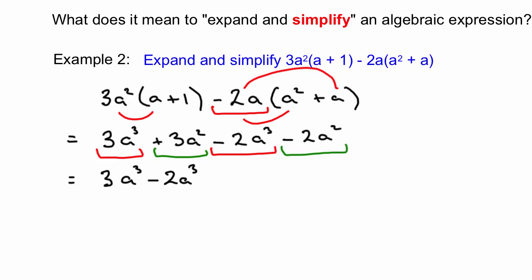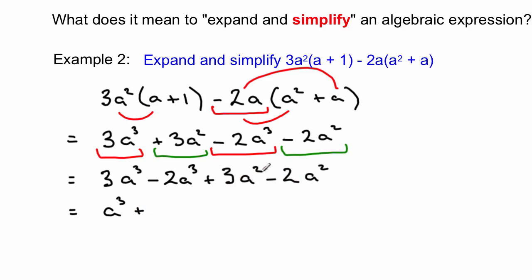There's also 3a squared and minus 2a squared, so we combine those as well: 3a squared minus 2a squared. Now simplify: 3 minus 2 is 1, so that's 1a cubed — we write it without the 1 since it's an invisible 1 — giving us just a cubed. Then 3 minus 2 is 1 again, so it's a squared. That's our solution. We expanded up here and simplified down here — that's how we expand and simplify algebraic expressions.